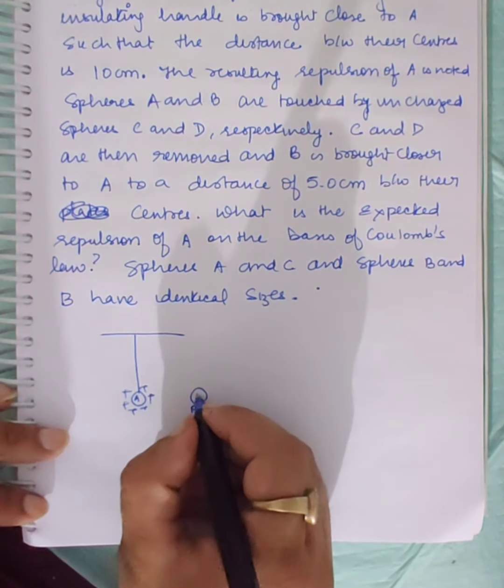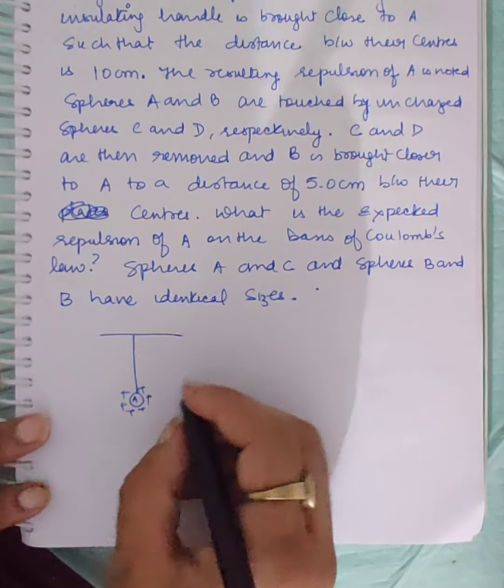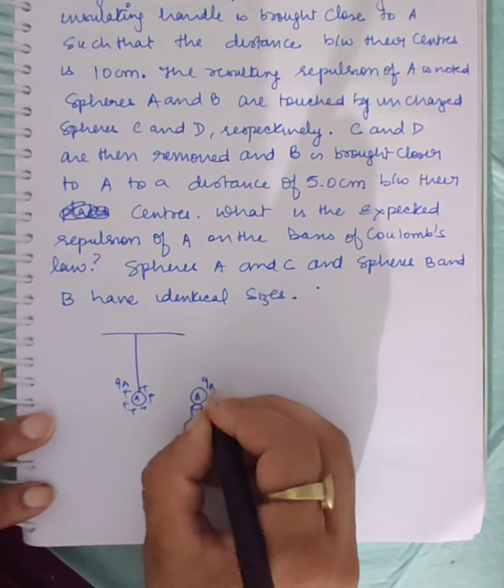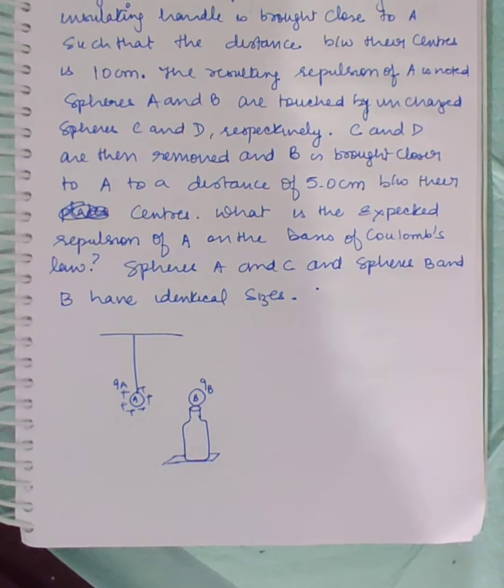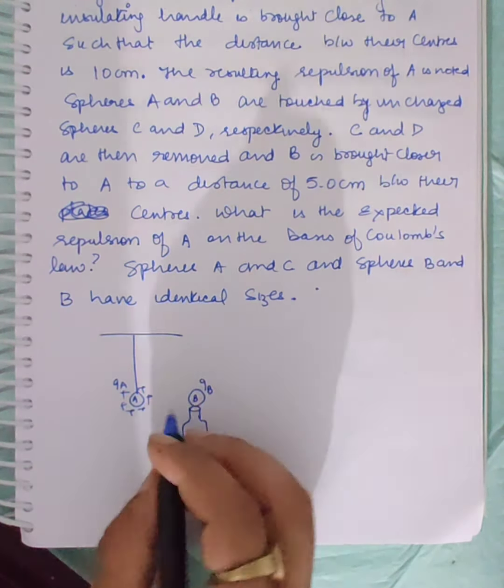The spheres have charges QA and QB. The resulting separation and repulsion of spheres A and B are noted and observed.